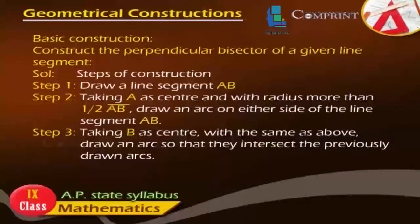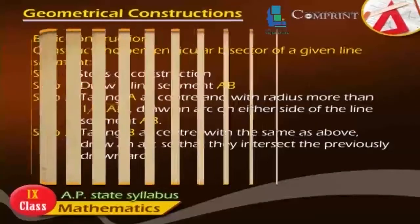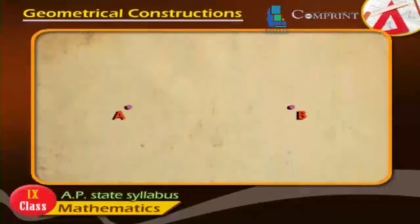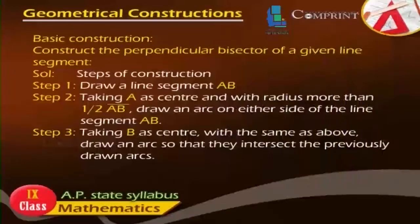Basic Construction: Construct the perpendicular bisector of a given line segment. Step 1: Draw a line segment AB. Step 2: Taking A as center and with radius more than half of line AB, draw an arc on either side of the line segment AB.